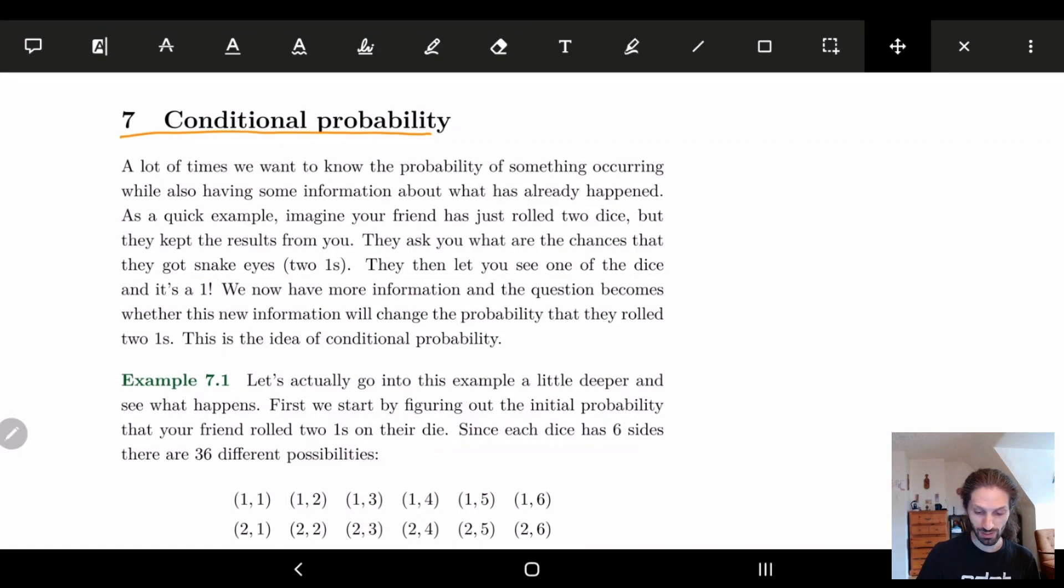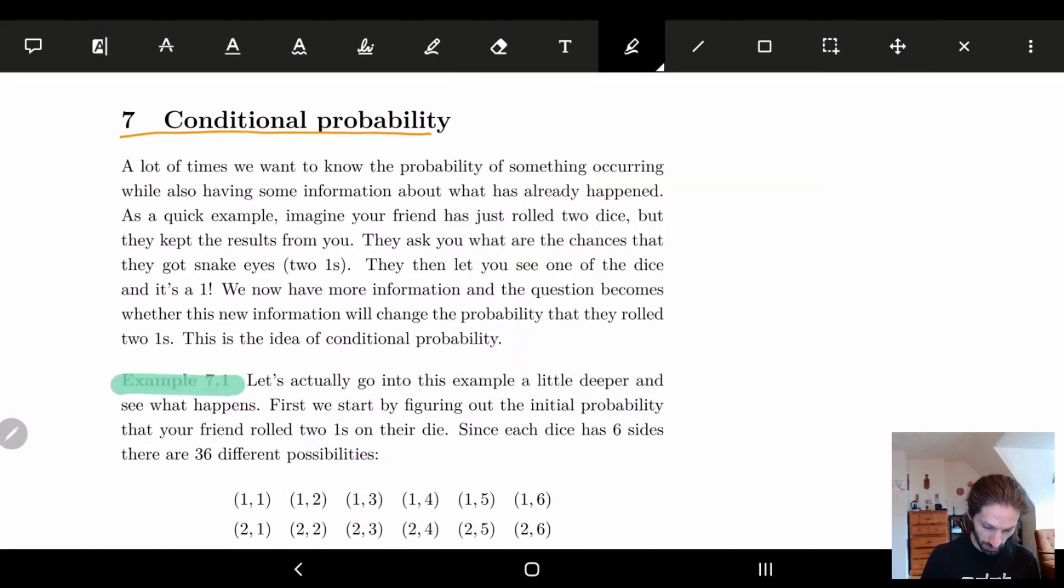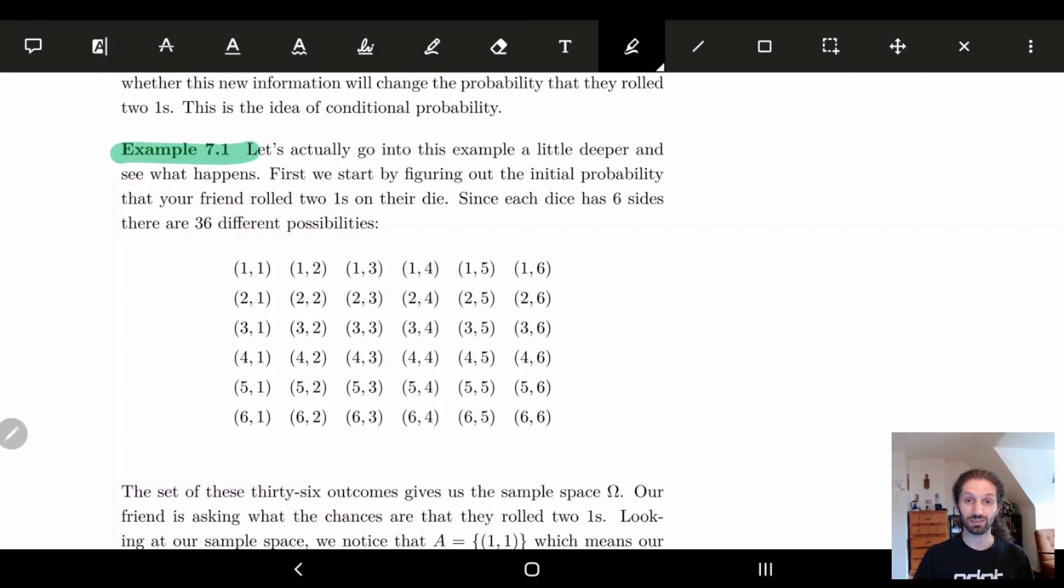So basically we're going to go through this example in detail. And that's going to be our first example for today. And so we're going to talk about this idea of conditional probability when one thing is dependent on something else.